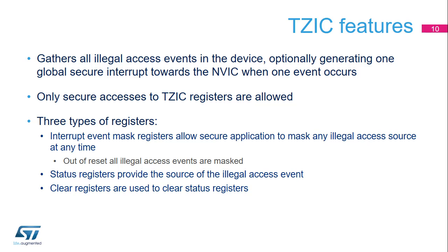The TZIC gathers all illegal access events and generates a maskable global secure interrupt towards the NVIC. Only secure accesses are allowed to TZIC registers. It supports three types of registers: illegal access event mask, illegal access event status, and illegal access event clear. By default, all illegal access events are masked. Any non-privileged transaction trying to access a privileged resource is considered illegal, but no illegal access event is generated for this type; the addressed resource follows a silent-fail behavior, returning all-zero data for reads and ignoring writes, with no bus error generated.